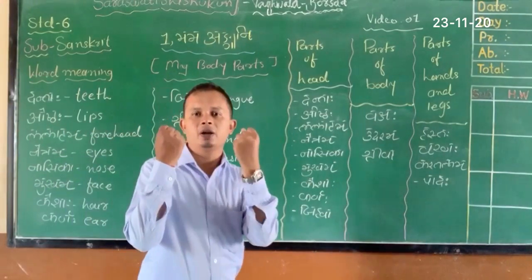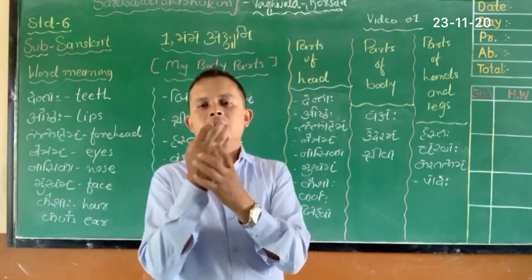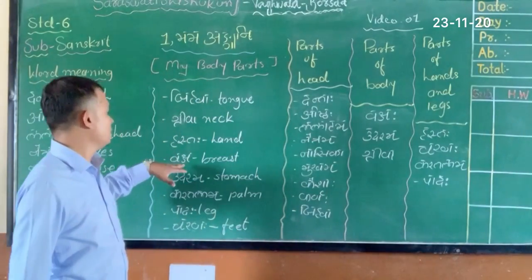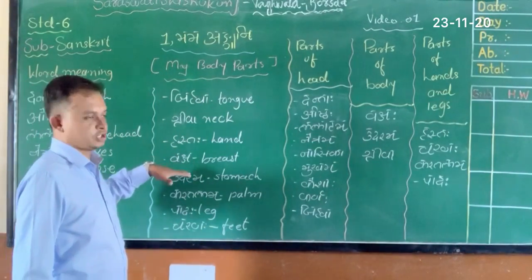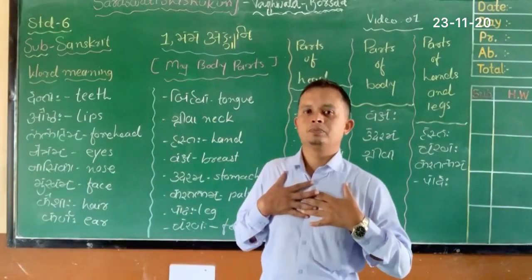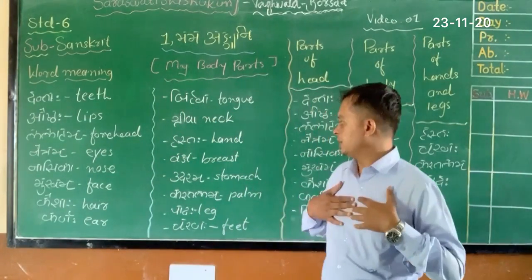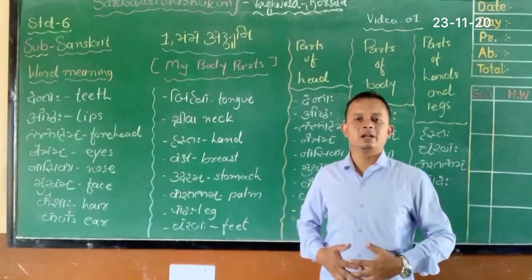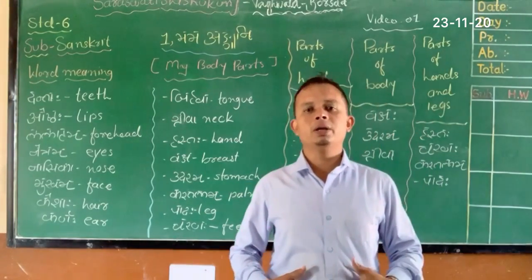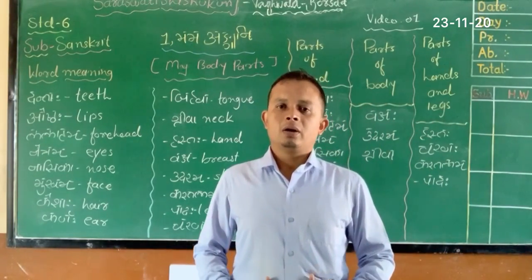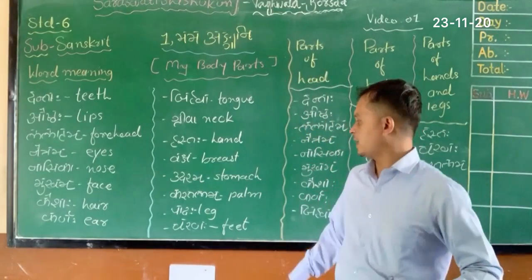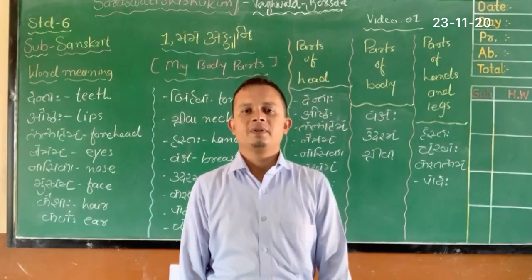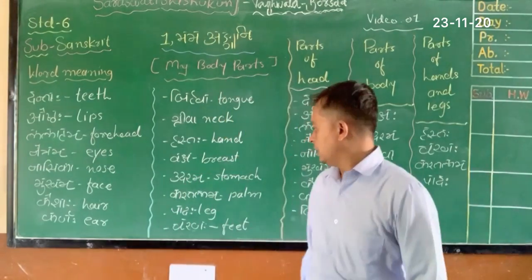Ashtah means our hand. Next, Vox or Box means our chest — the strong part of our body. Udara means stomach — this is part of our body. Palang means our leg.